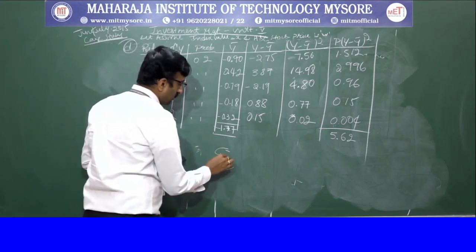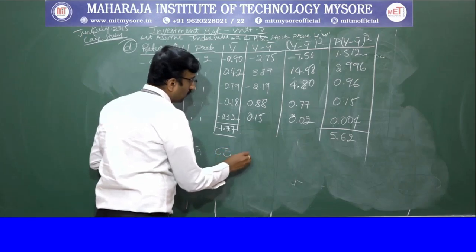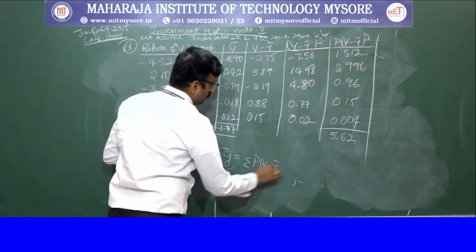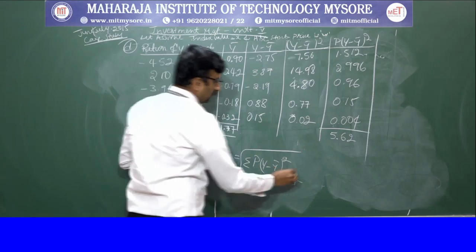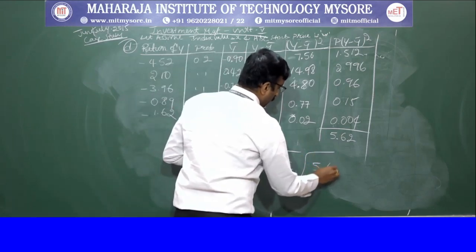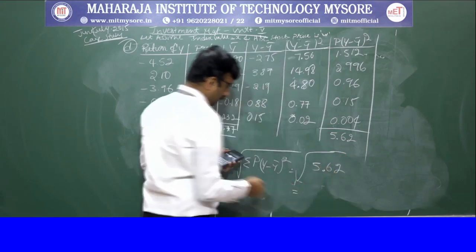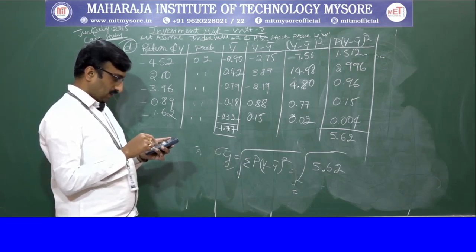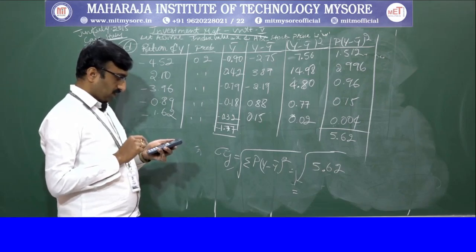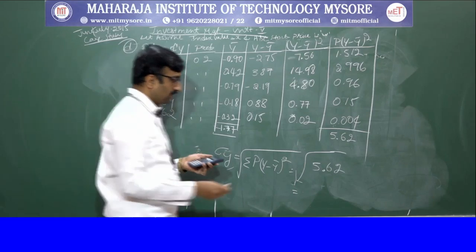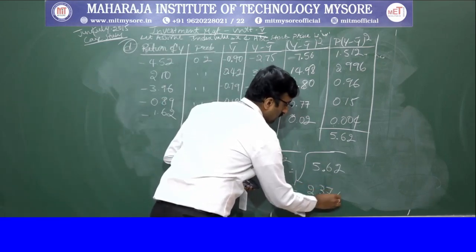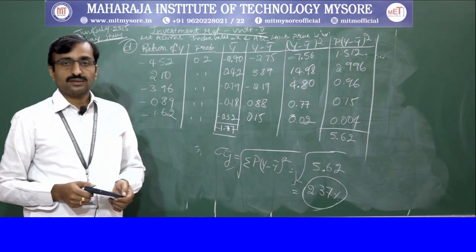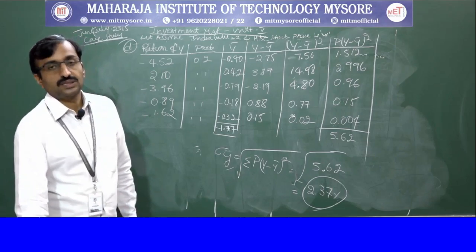Applying the standard deviation formula: σ = √[Σp(y − ȳ)²] = √5.62 = 2.37. This is the overall risk of the stock in terms of standard deviation. That completes all four parts of the question. Thank you so much.